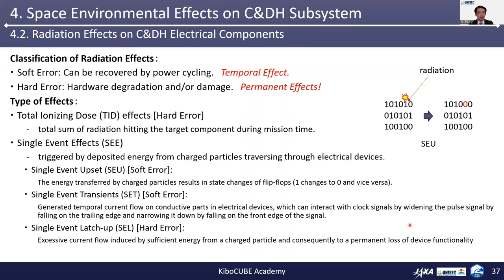SEU stands for single event upset, a soft error where energy transferred by charged particles results in state changes of flip-flops — one changes to zero and vice versa. SET stands for single event transients, also a soft error — a generated temporal current flow on the conductive parts of electrical devices by radiation, which can interact with clock signals. SEL stands for single event latch-up, a hard error — an excessive current flow induced by sufficient energy from a charged particle, which can lead to a permanent loss of device functionality. These are the main radiation effects you should take into account when designing radiation-tolerant or radiation-hard electronic devices.